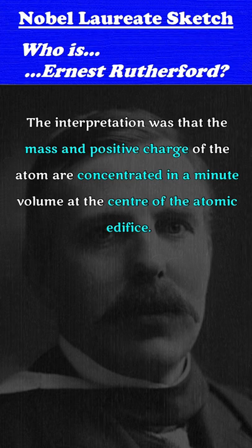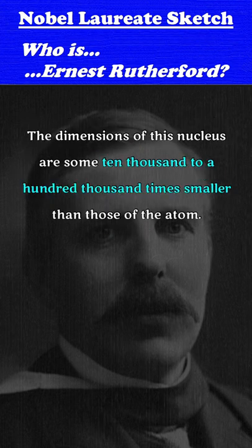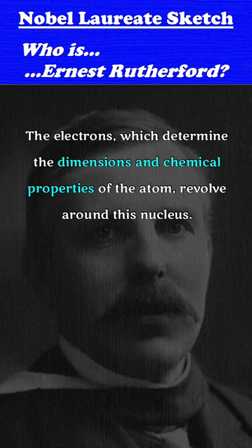The interpretation was that the mass and the positive charge of the atom are concentrated in a minute volume at the center of the atomic edifice. The dimensions of this nucleus are some 10,000 to 100,000 times smaller than those of the atom. The electrons, which determine the dimensions and chemical properties of the atom, revolve around this nucleus.